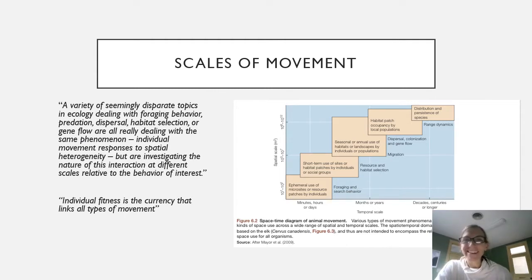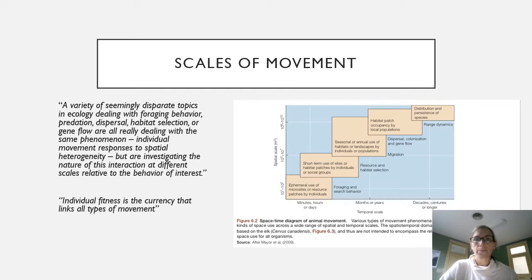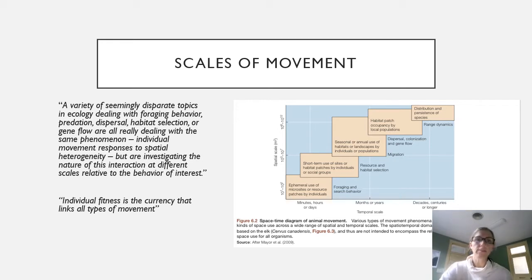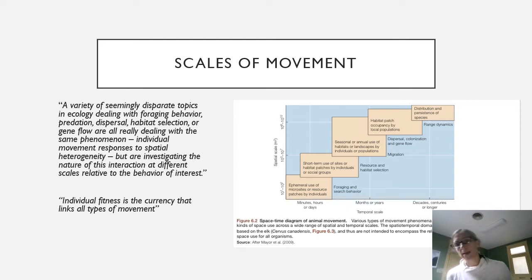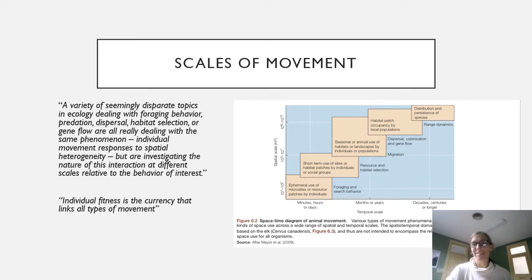There are a variety of seemingly disparate topics in ecology dealing with foraging behavior, predation, dispersal, habitat selection, and gene flow, and all of those are really dealing with the same phenomena: an individual's movement response to spatial heterogeneity. We are investigating the nature by which this interaction happens at different scales relative to the behavior of interest. Individual fitness is the currency that links all types of movement — we can think of an organism as constantly weighing the cost-benefit of its movement through space, what's the reward in resources, what's the risk in potential predation.